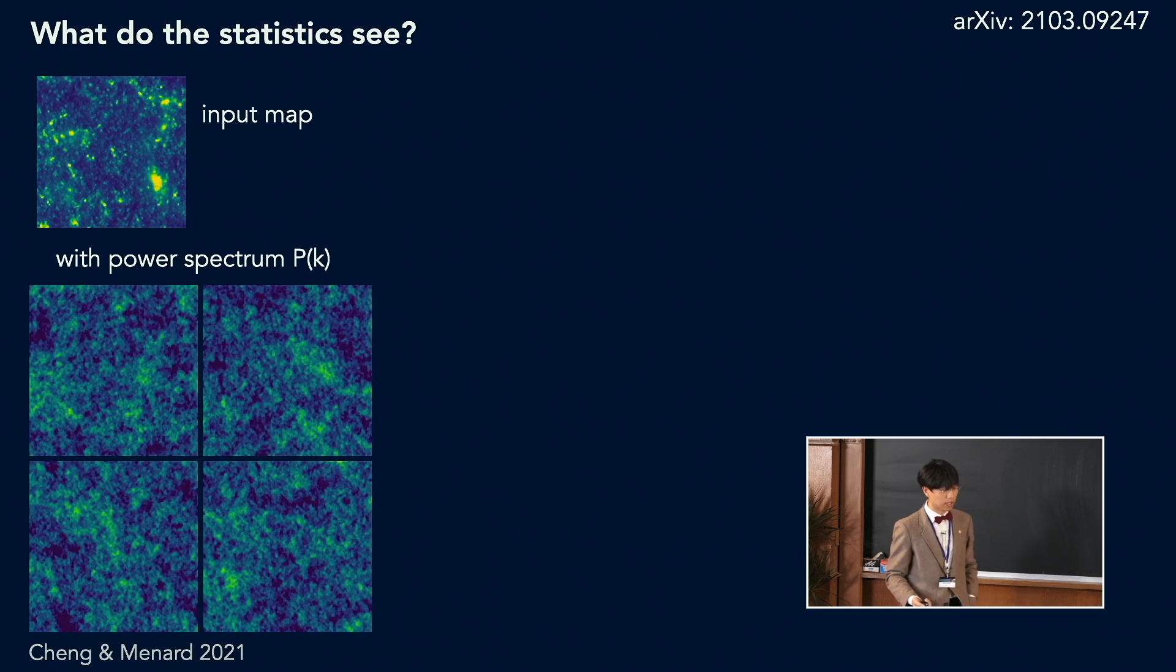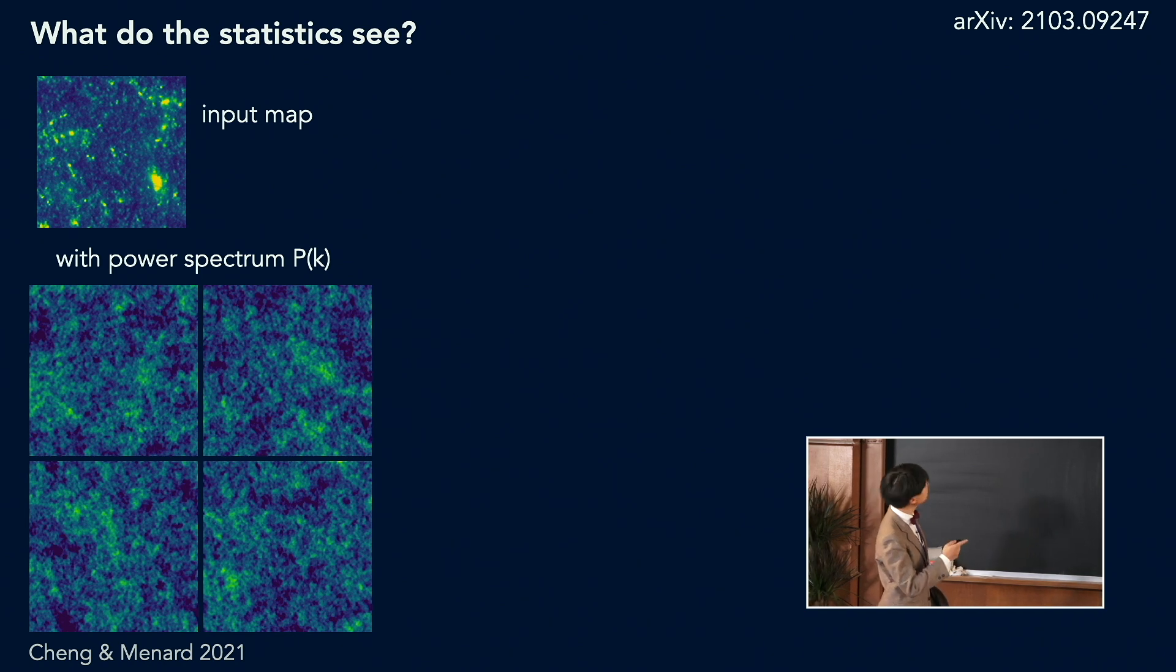Right, so to show its demonstrative power, first I'm showing some results from image synthesis here. The idea is that with an input field, the upper part, from the input field we calculate some particular statistics and then we randomly generate new images with the same summary statistics as the input field. And then we compare the texture of the generated image and the input image. So this is a way to show you what a particular statistic sees from a field, what would a field look like in the eye of a particular statistic.